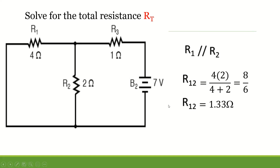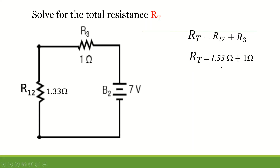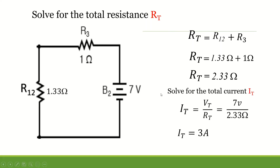The circuit will be reduced to R12 (1.33 ohms) in series with R3 (1 ohm). Using the series formula, 1.33 plus 1 equals 2.33 ohms. The total current is 7 volts divided by 2.33 ohms, and we will get 3 amperes for the total current.